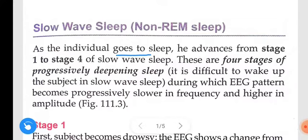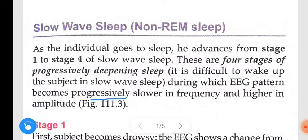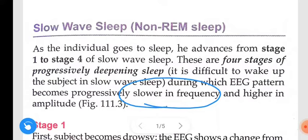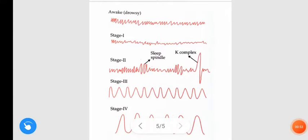As the individual goes to sleep, he advances from stage 1 to stage 4 of slow wave sleep. These are 4 stages of progressively deepening sleep. It is difficult to wake up the subject in slow wave sleep, during which the EEG pattern becomes progressively slower in frequency and higher in amplitude, as shown in this figure.